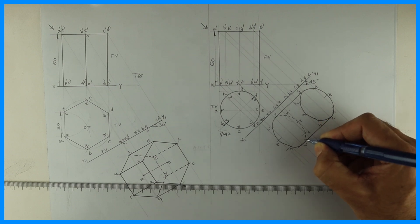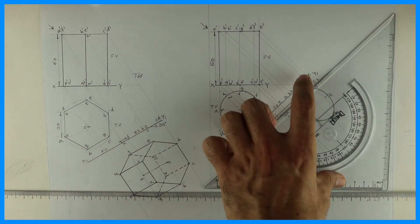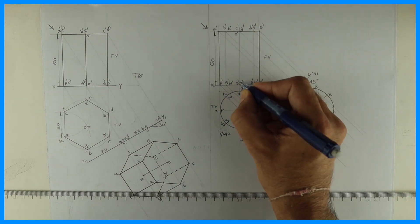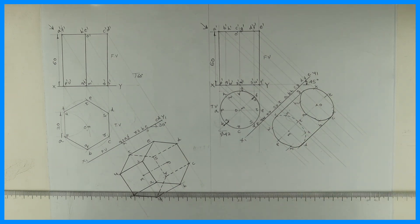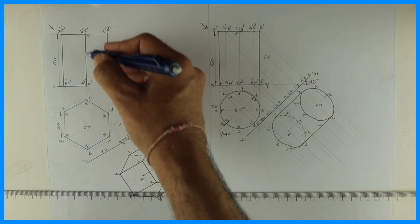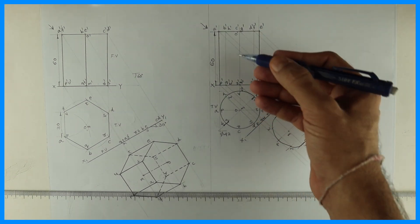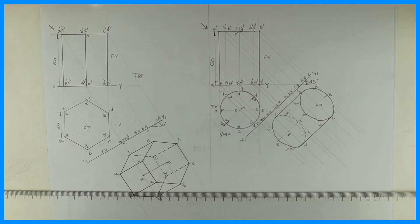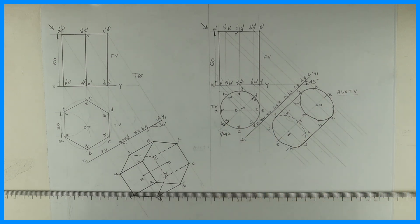Now the question is how to draw the axis line. We are drawing generators — the axis is o-dash m-dash, so if I'm drawing om as a generator, then if I draw axis I'm giving it preference over the generator, which is confusing. In this case the axis is behind the edge — the generator overlaps with the axis. If your teacher asks you to draw the axis line, draw om as an axis or show om as two points in the auxiliary top view. Thank you.